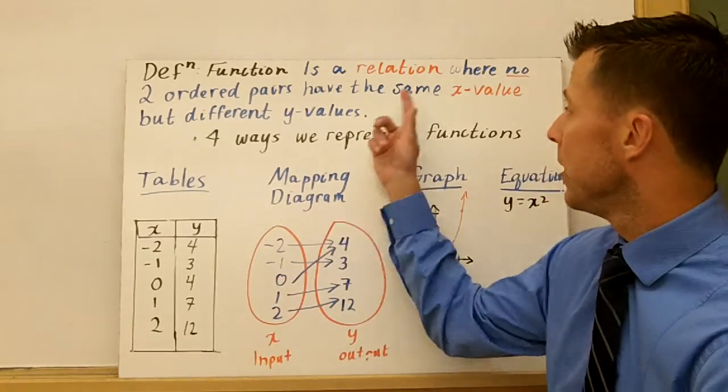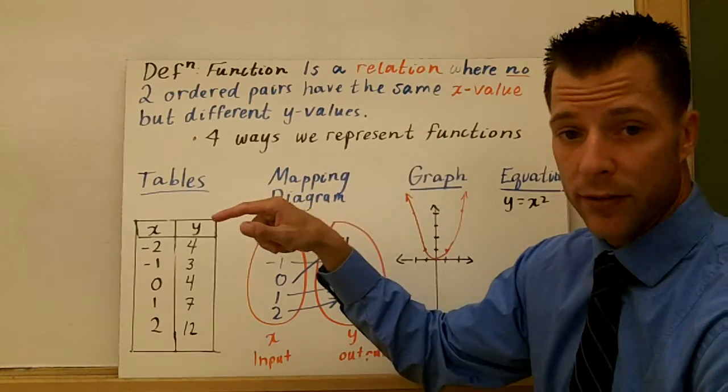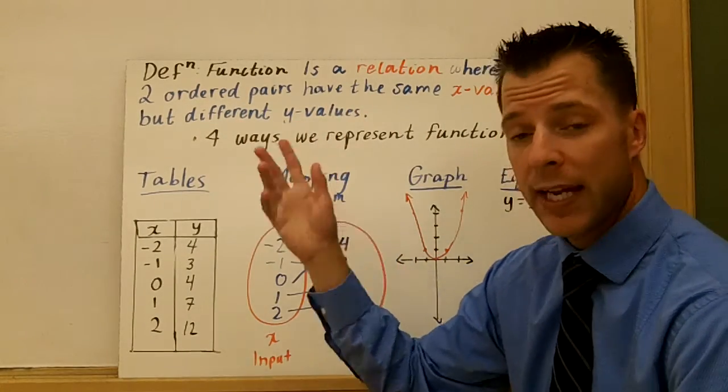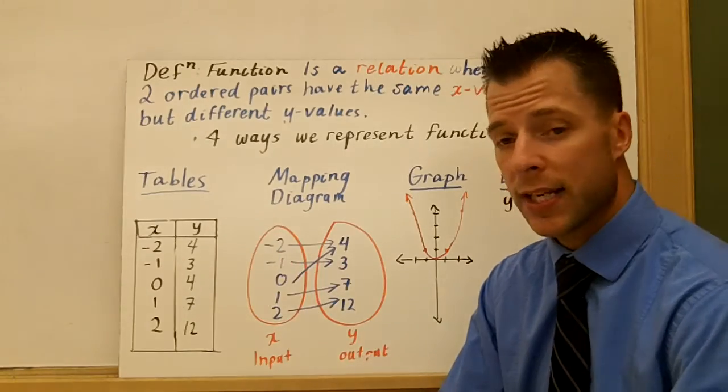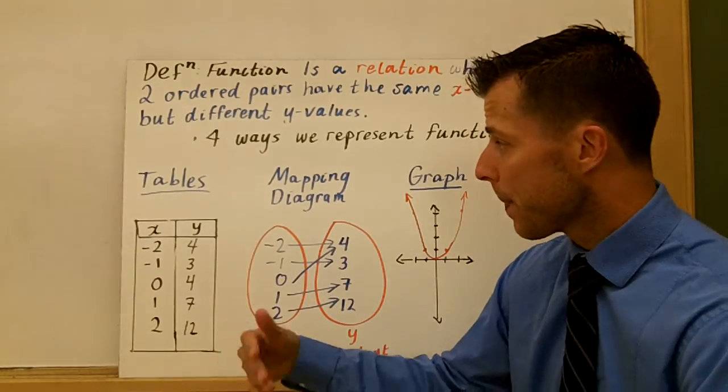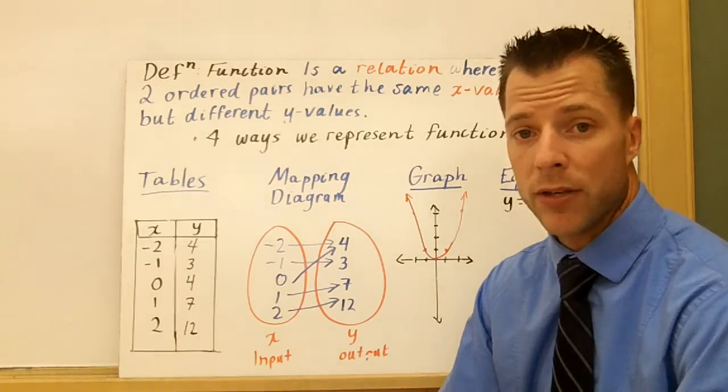there's a catch to what a function can be. No two ordered pairs have the same x value, and they can have different y values. So really the idea here is when you look at a set of ordered pairs, you don't want to see an x repeat. If you see an x repeat, there could be a problem.